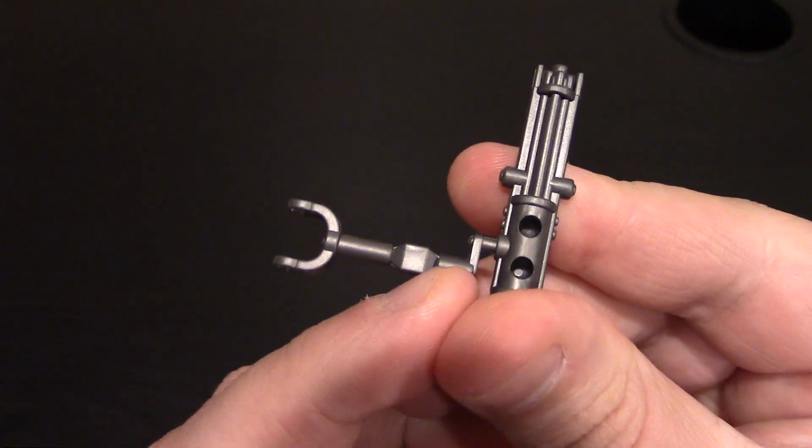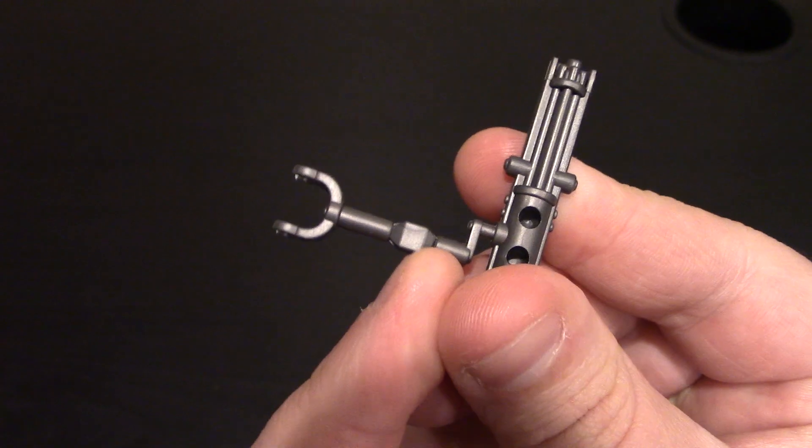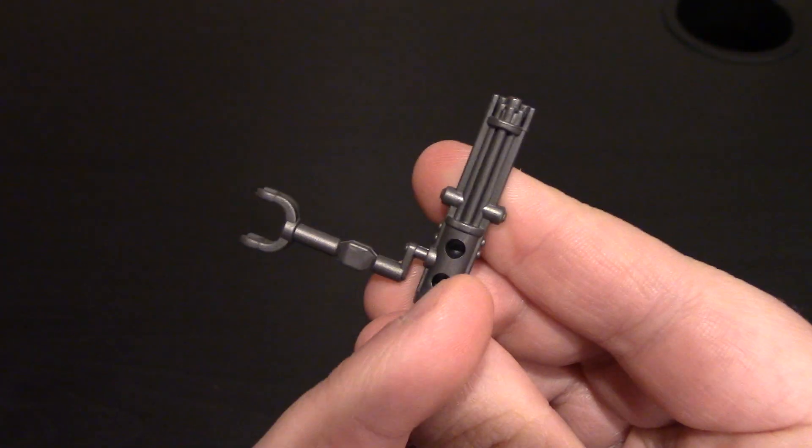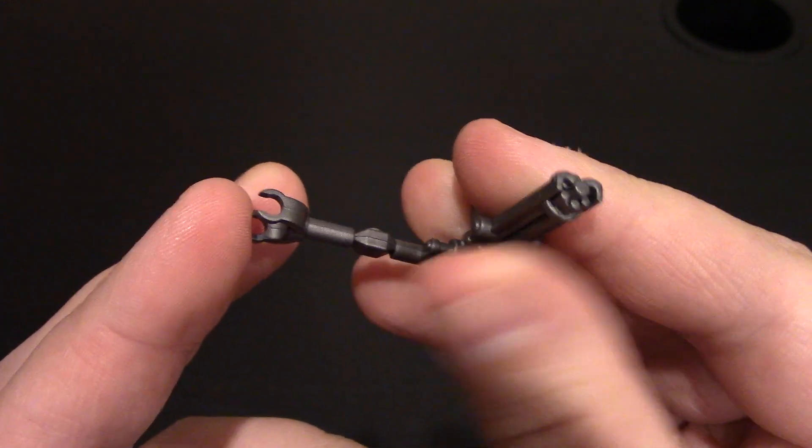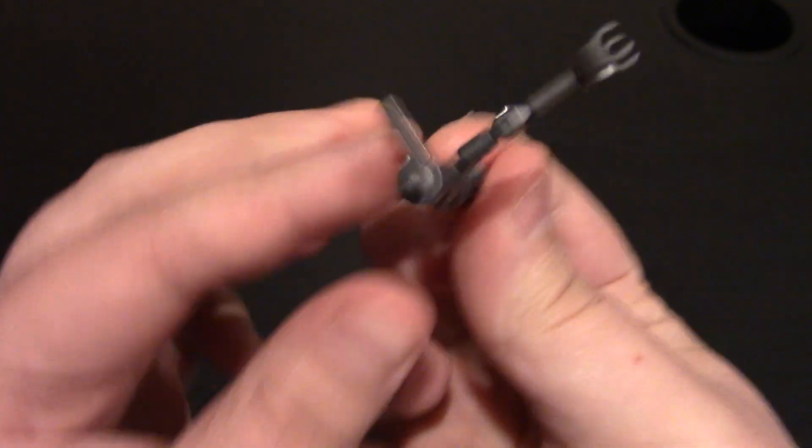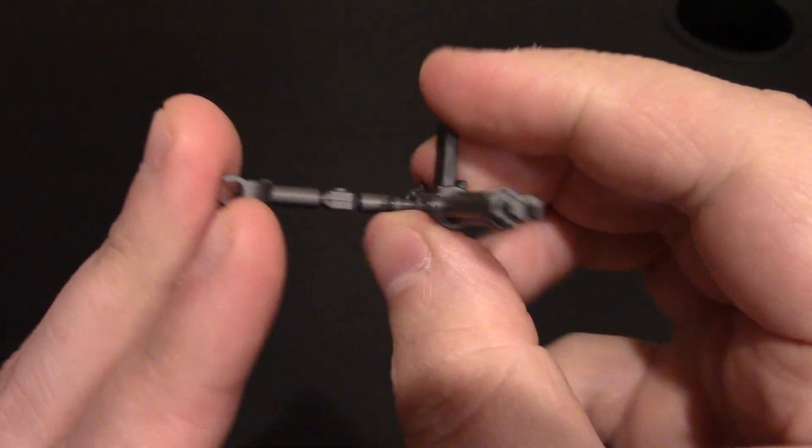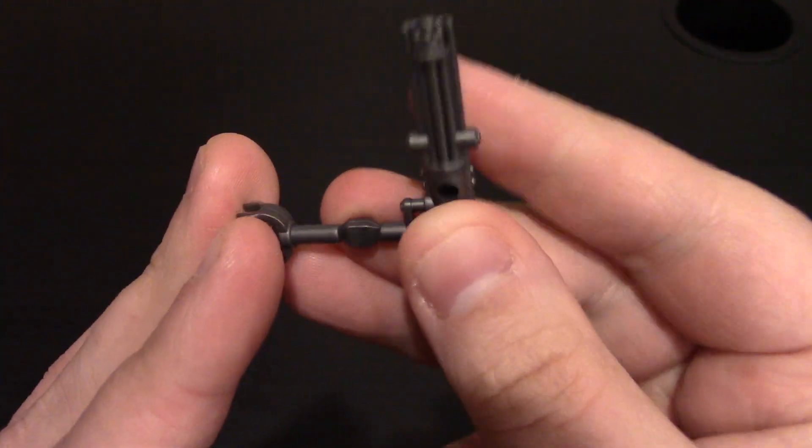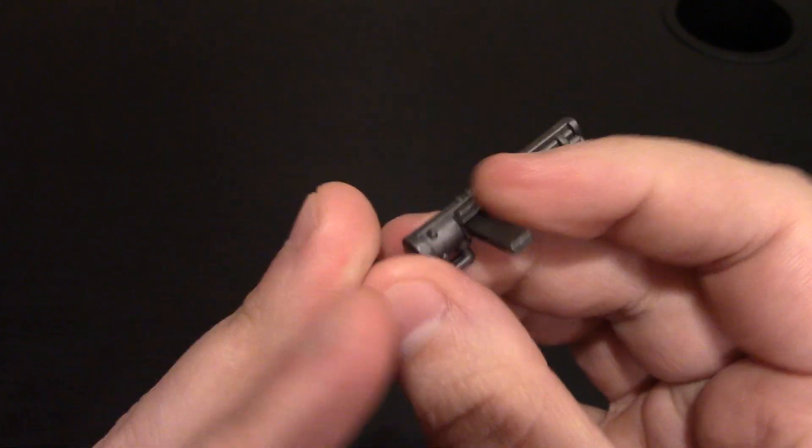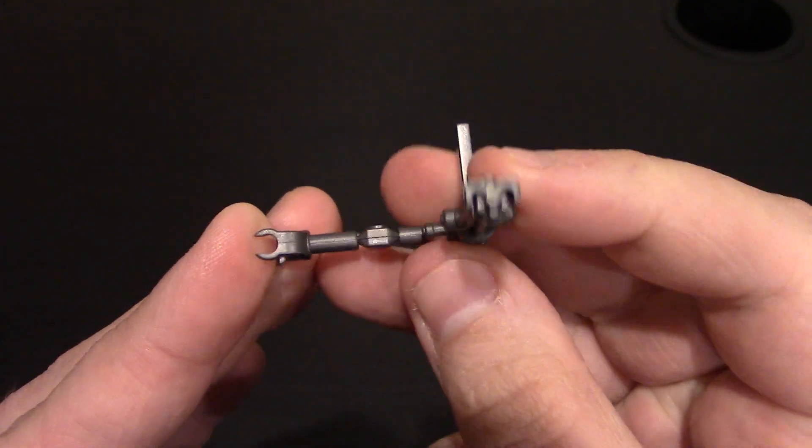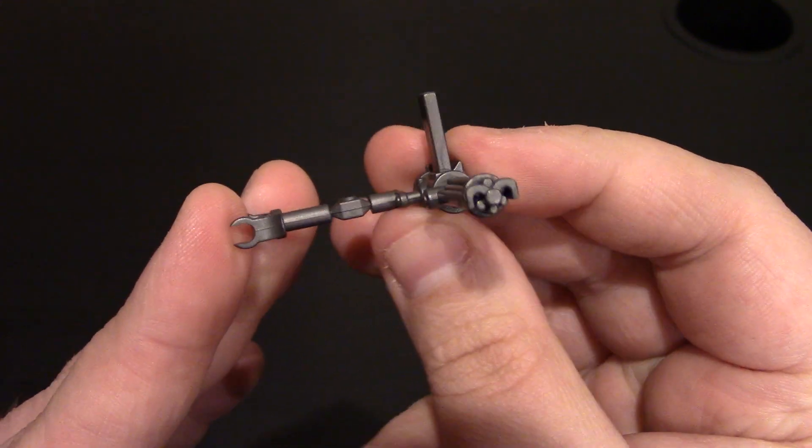And lastly, we have a Gatling gun. This one's cool because it actually has parts that you would cut off here. This piece is meant to be attached here, so it makes it look like it has the capability to mount and crank it. But a pretty cool big piece.